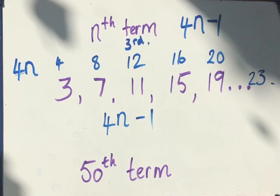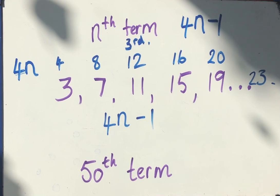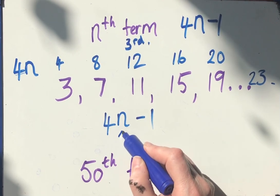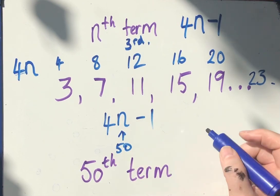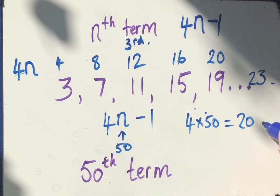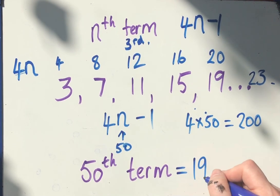Well that means if I want the 50th, I simply have to know what 4 times 50 is. 4 times 50, 4 fives are 20 times 10 is 200, take away 1. The 50th term is 199.